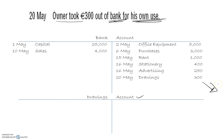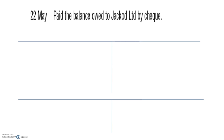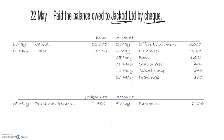22nd of May: paid the balance owed to JackoD by cheque. Looking at JackoD's account: we owed 2,000, sent back 500 worth of goods, so we now owe 1,500 euro. We write a cheque so money comes out of the bank: 22nd of May, JackoD, 1,500 on the credit side of bank. On the debit side of JackoD's account: 22nd of May, bank, 1,500 euro.